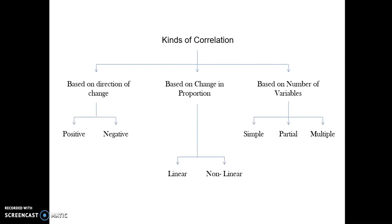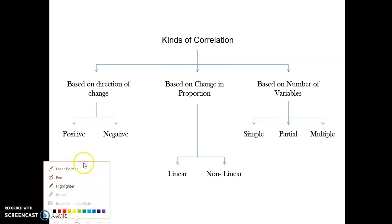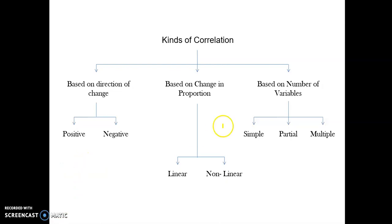Correlation can be studied on the basis of three different parameters: direction of change, change in proportion, and number of variables under study. Based on direction of change, the first type is positive correlation — when two variables move in the same direction. If one increases, the other also increases. For example, the price of steel and the price of a car: if steel prices go up, car prices also go up.